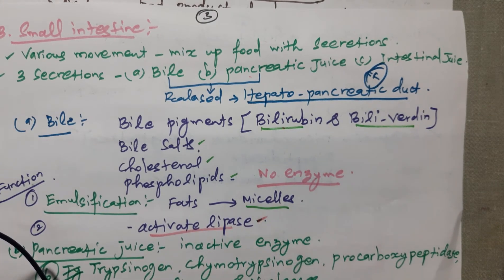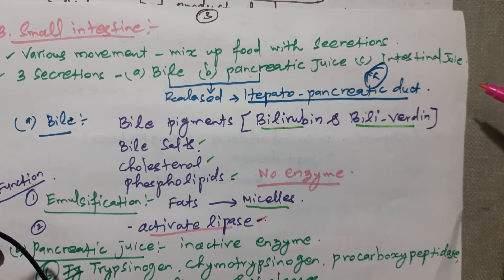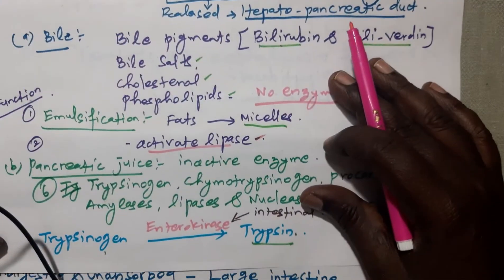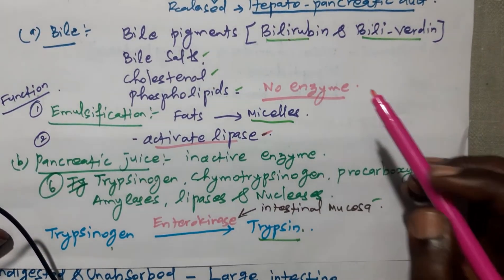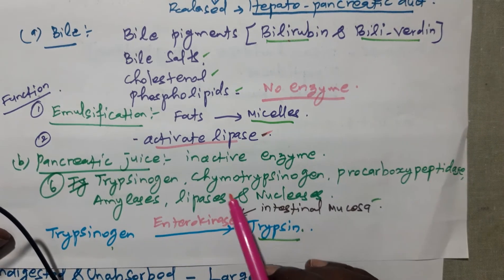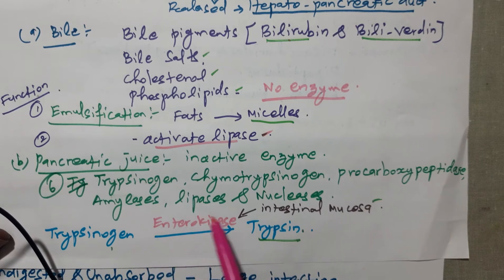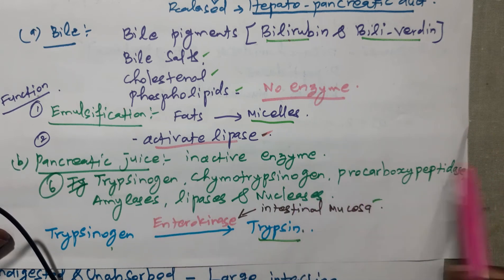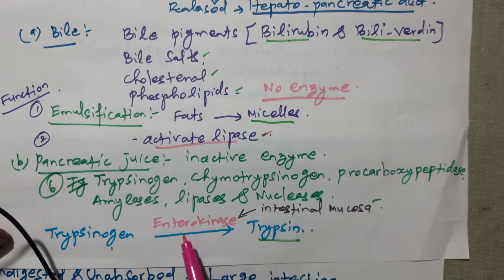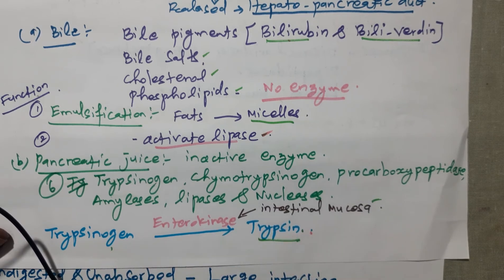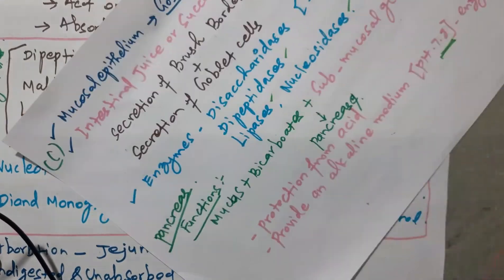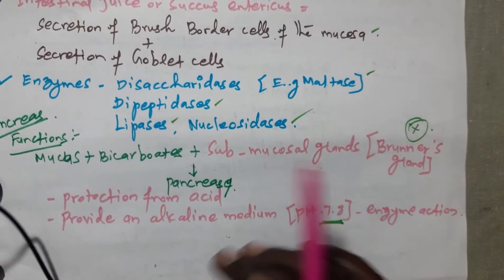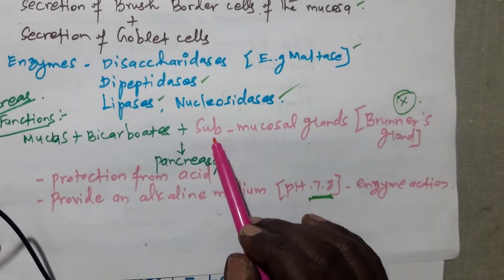Next is pancreatic juice. The pancreatic juice consists of six inactive enzymes: trypsinogen, chymotrypsinogen, procarboxypeptidase, amylase, lipase, and nuclease. Some enzymes help activate these inactive enzymes. First, trypsinogen is activated by enterokinase, an enzyme secreted from the intestinal mucosa, and trypsinogen is converted into trypsin, the active form. The pancreatic juice also consists of mucus, bicarbonate, and submucosal glands.